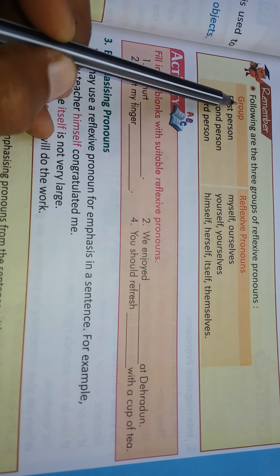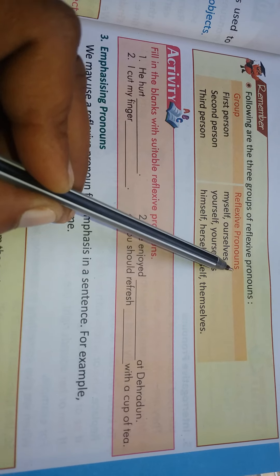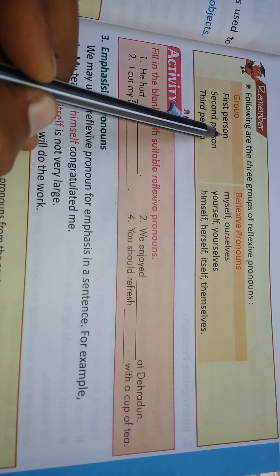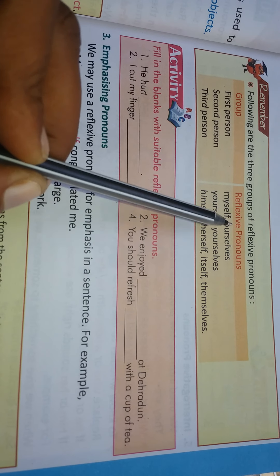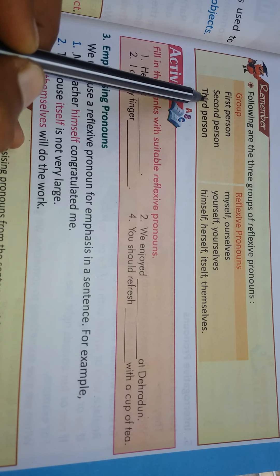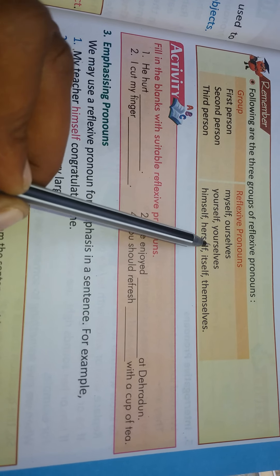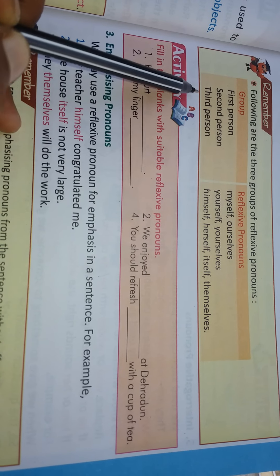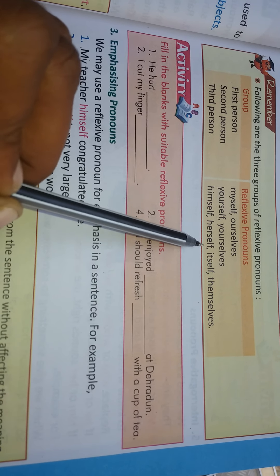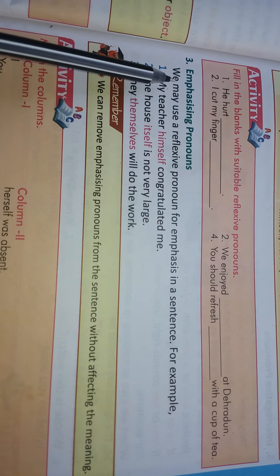Remember, group reflexive pronouns: 1st person — myself, ourselves; 2nd person — yourself, yourselves; 3rd person — himself, herself, itself, themselves.